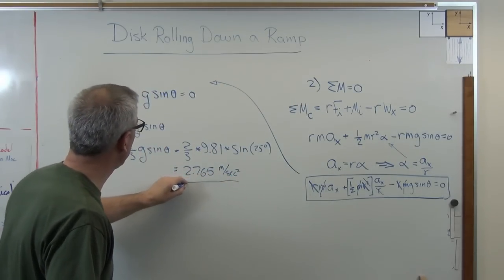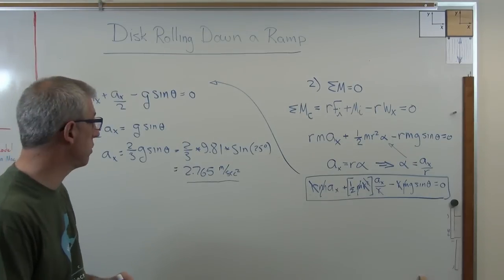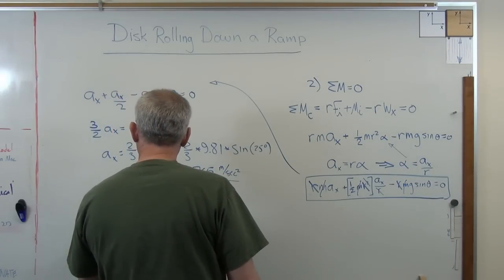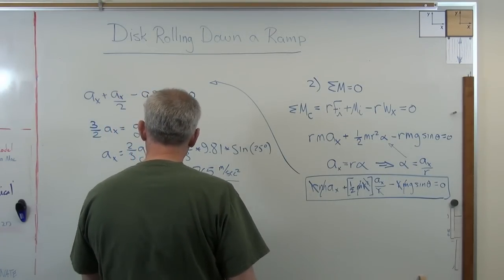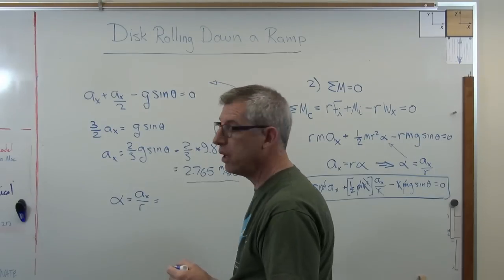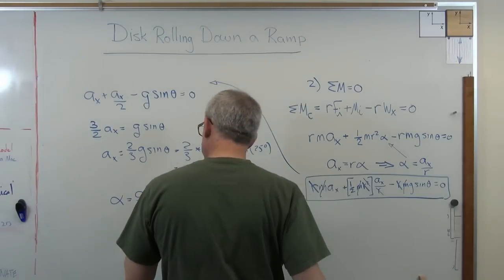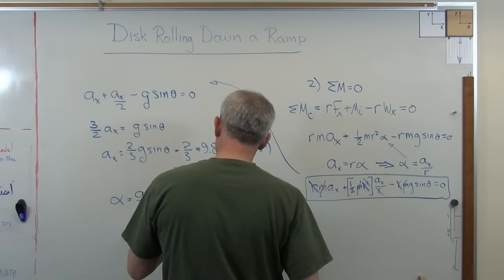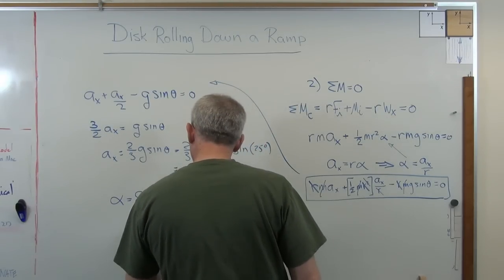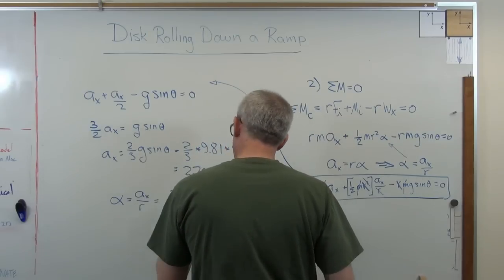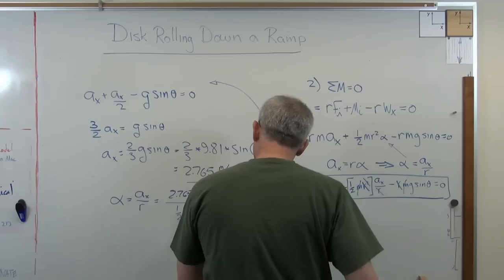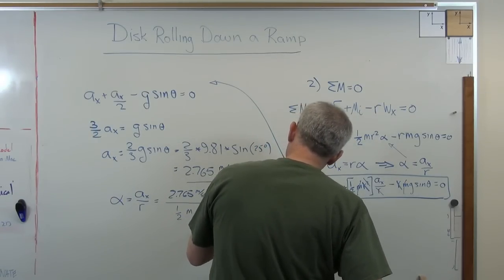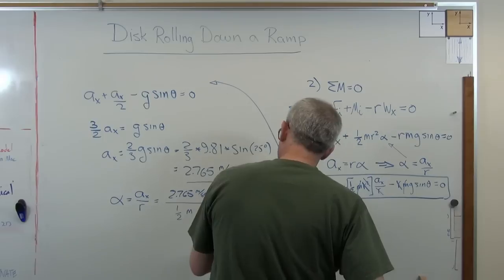Now this is acceleration in a straight line, in linear terms. If you want the rotational acceleration, we can still do that. We know that alpha equals A sub X over R. Now my radius is half a meter. So what I'm going to get here is basically double that answer. So I get 2.765 meters per second squared divided by one half meter. And we're going to get double that answer. So we're going to get 5.528 radians per second squared. There's my other answer.